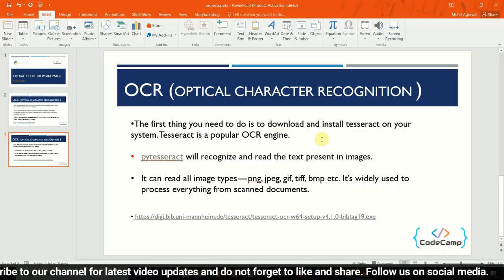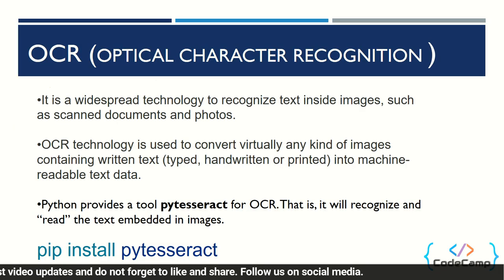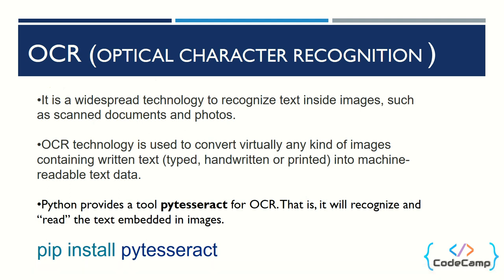Let's understand what OCR is. Basically, OCR is Optical Character Recognition. It is a widespread technology to recognize text inside images such as scanned documents and photos. This technology is used to convert virtually any kind of image containing written text into machine-readable text.